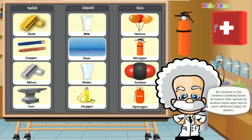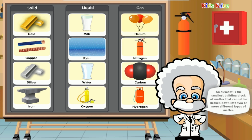Examples of elements are iron, copper, silver, gold, hydrogen, carbon, nitrogen, and oxygen. The lightest elements are hydrogen and helium.